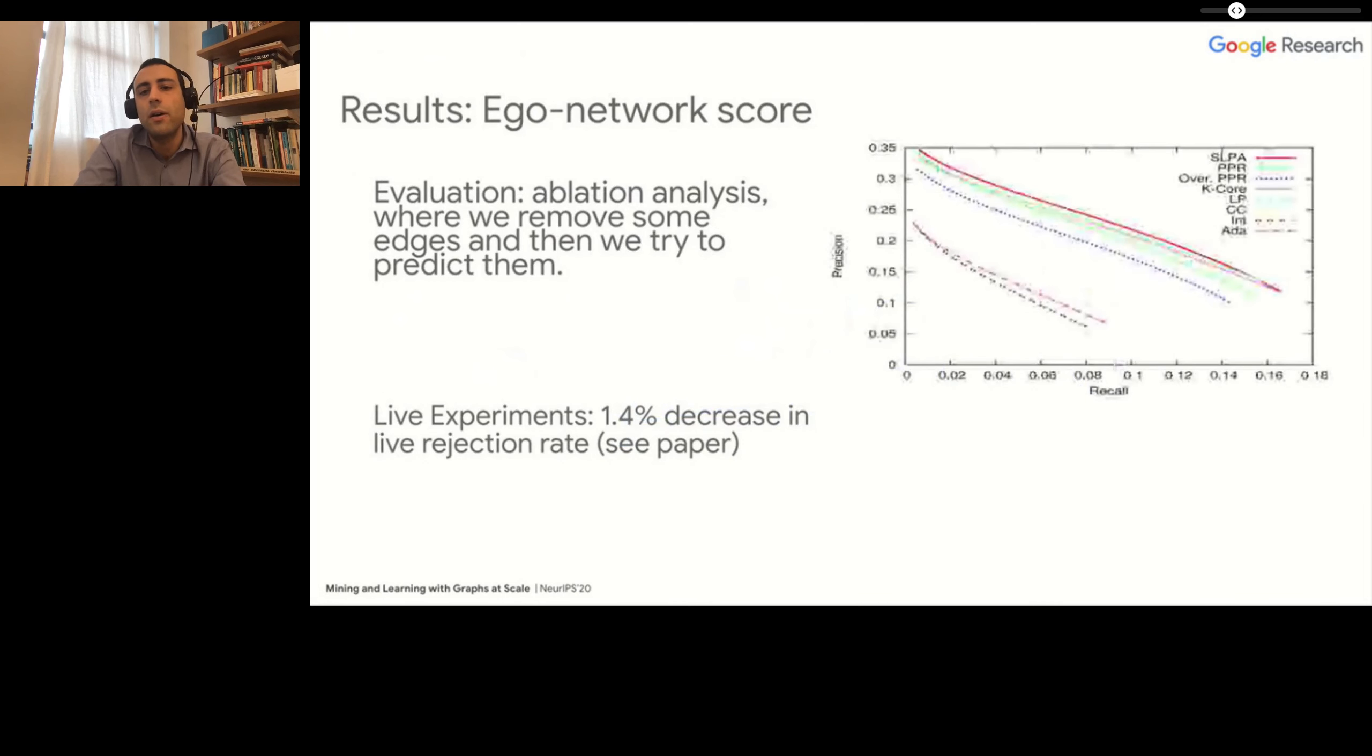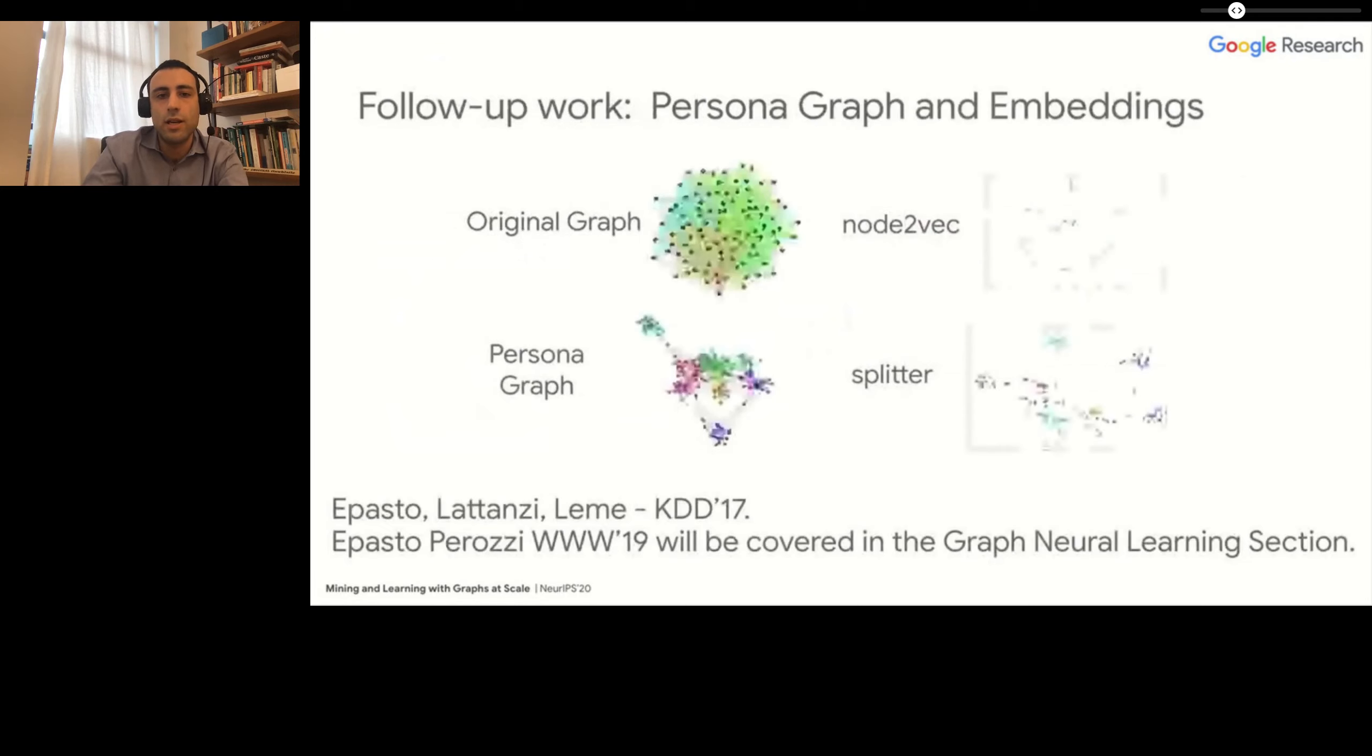I want to convince you that this is actually something you can compute efficiently. Without going into the details, what we have seen is that it actually outperforms other similarity scores, both in an ablation study and also in a live experiment, where we show that this reduces by a significant factor the number of rejected suggestions. If you are interested, please contact us or check our paper.